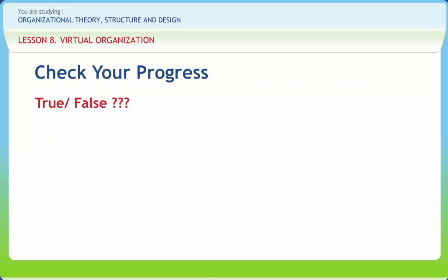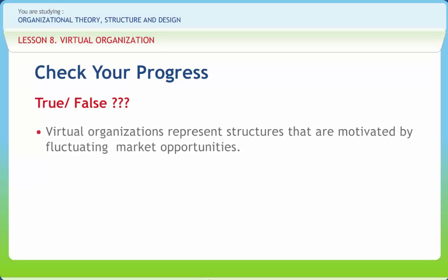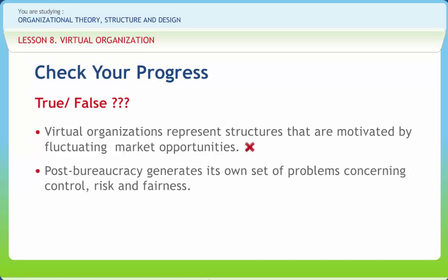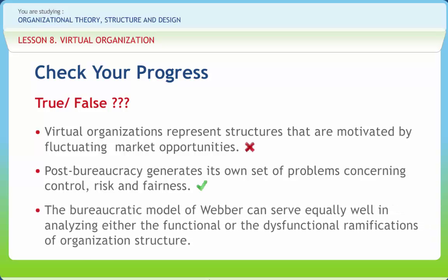Let's check if you have understood the various concepts discussed in this lesson. Virtual organizations represent structures that are motivated by fluctuating market opportunities — right or wrong? Wrong. Post-bureaucracy generates its own set of problems concerning control, risk and fairness — right or wrong? Right. The bureaucratic model of Weber can serve equally well in analyzing either the functional or the dysfunctional ramifications of organizational structure — right or wrong? Right.